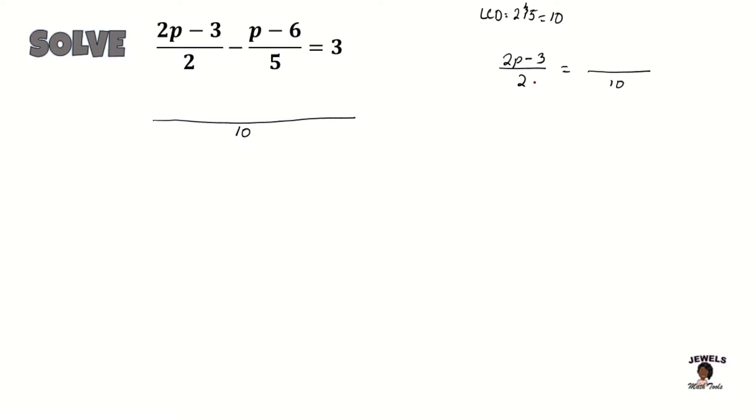So we're looking for the number that when we multiply it to 2, it's going to equal 10. And we know that 2 times 5 is equal to 10. And if we multiply 2 times 5, that means that everything in my numerator also has to be multiplied by 5. So 5 times 2p will equal 10p, and then 5 times negative 3 will equal negative 15. And we now have 10p minus 15.